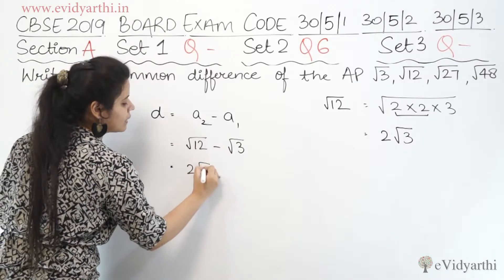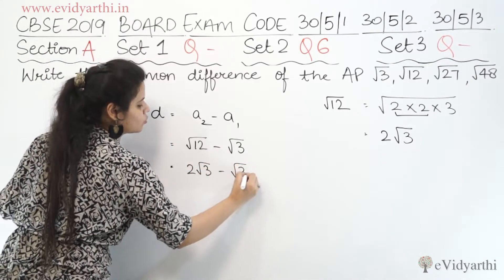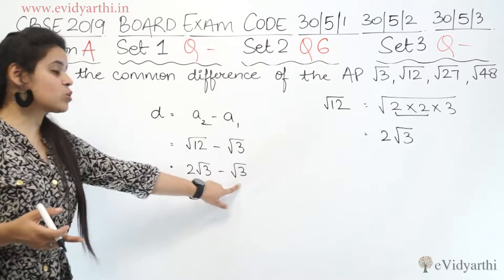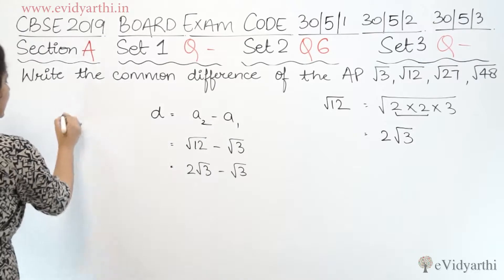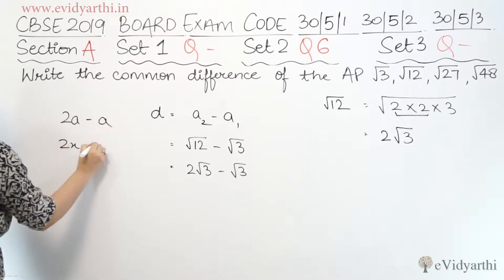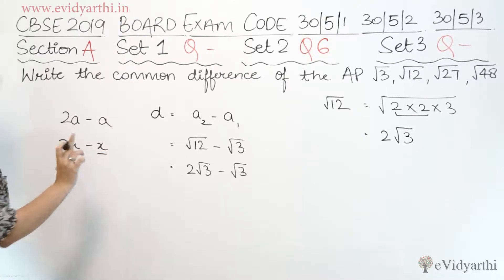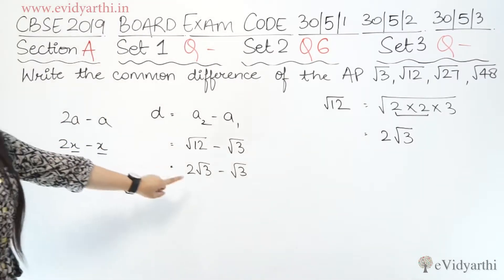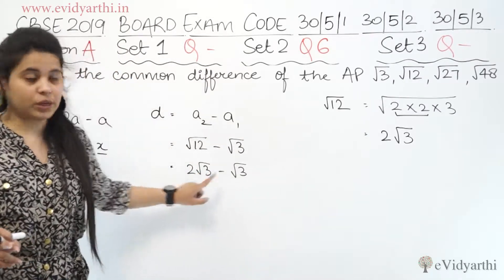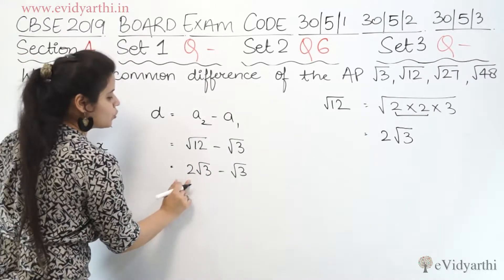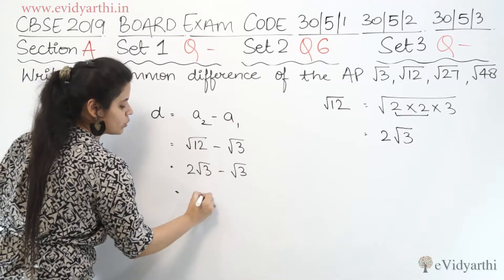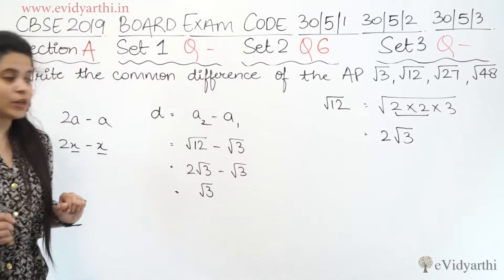So I can write: 2√3 minus √3. Now you can subtract these. Just like 2a minus a equals a, or 2x minus x equals x — here both terms have √3, so you can subtract. 2 minus 1 is 1, so the answer is √3. So the common difference d = √3.